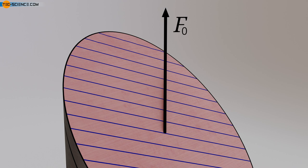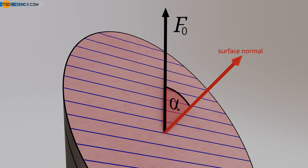The angle alpha describes the angle between the external tensile force F0 and the surface normal of the slip plane. The orientation of the slip direction is defined analogously as the angle beta between the tensile axis and the slip direction. Both angles are independent of each other only within certain limits. The external force F0 is decomposed into a component in slip direction by the cosine of the angle beta.